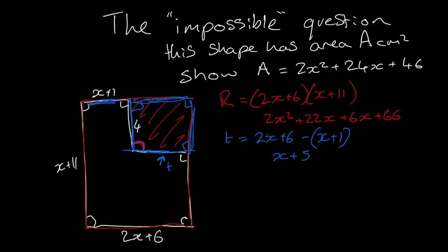So now that we know the base and the height we can work out the area of this section here. So the area of that which we're going to call B equals 4 times by x plus 5 which is 4x plus 20. Now that we've got those we can work out the area of A.